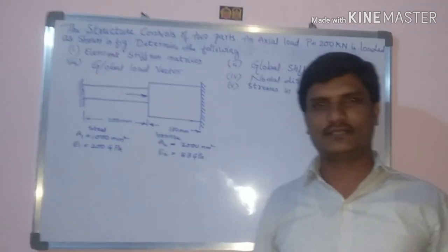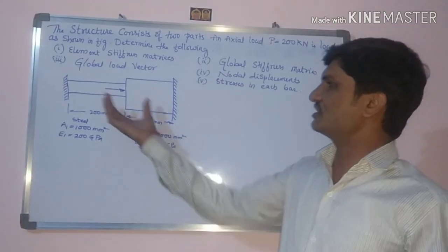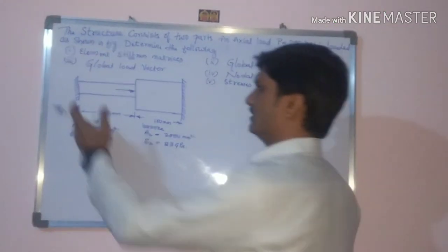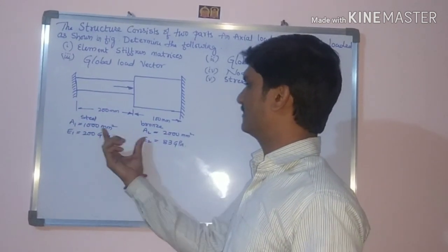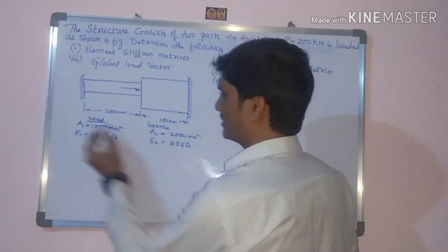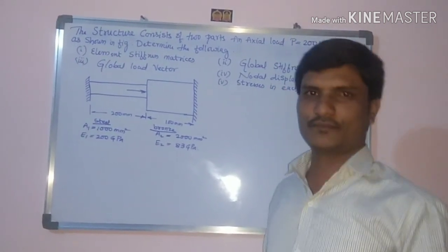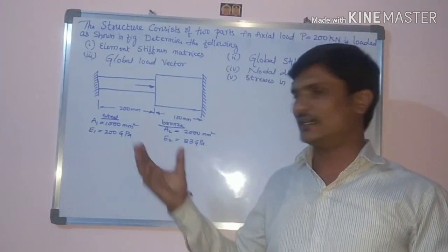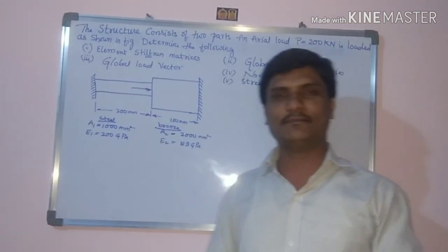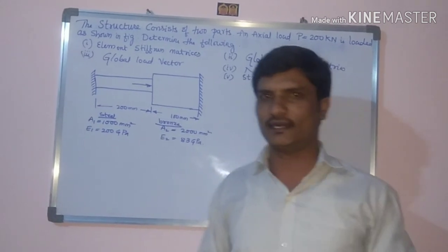Hello guys, today I am going to solve a problem based on finite element analysis. There is a stepped bar where both ends are fixed and both material properties are different. What are the general procedures in the finite element method? There are nine steps in which we can solve any type of finite element problem based on a 1D bar element.